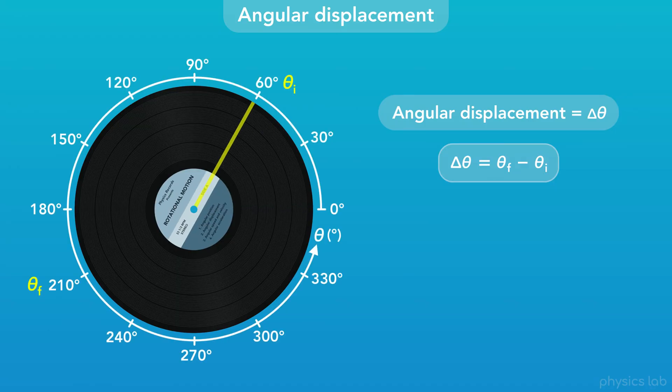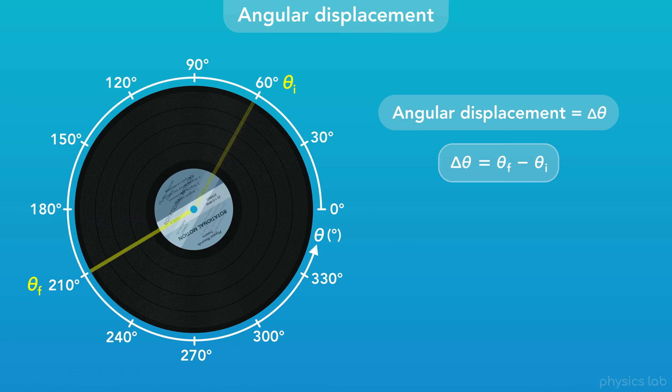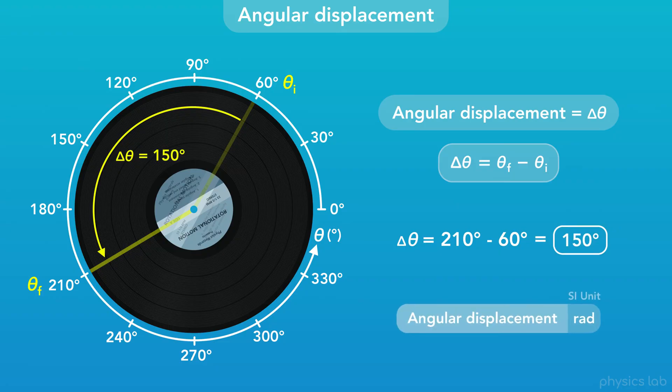So if this record starts at an initial position of 60 degrees, and then rotates to a final position of 210 degrees, then the angular displacement of the record would be 210 degrees minus 60 degrees, which equals 150 degrees. Like position, the SI unit for angular displacement is radians.